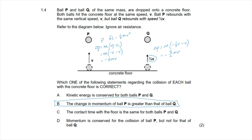Option C — the contact time with the floor is the same for both balls — is incorrect, because ball Q lost energy and must have been in contact with the floor for longer. Option D — momentum is conserved — is also incorrect for either ball because the velocity changes direction upon impact.